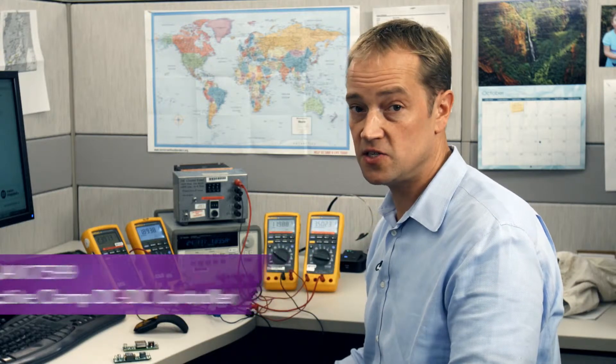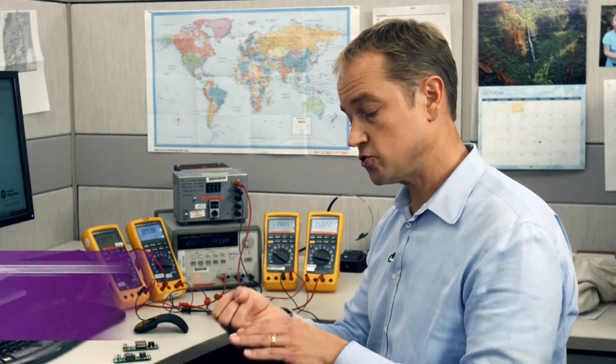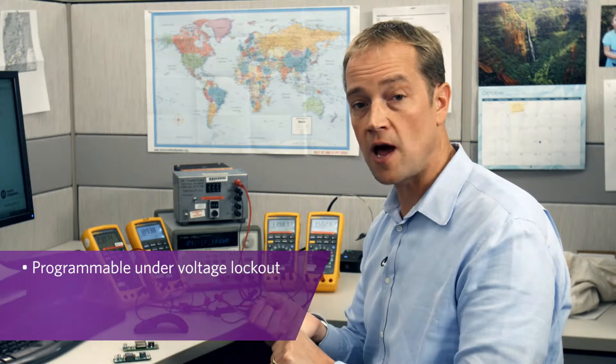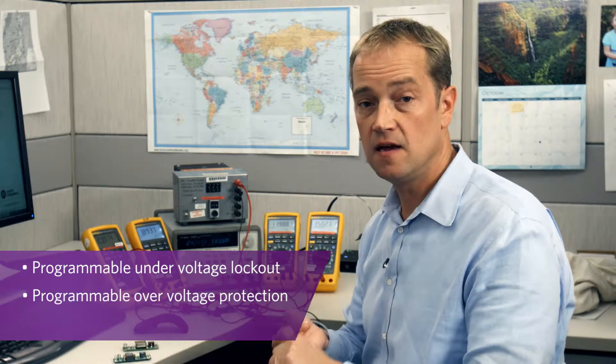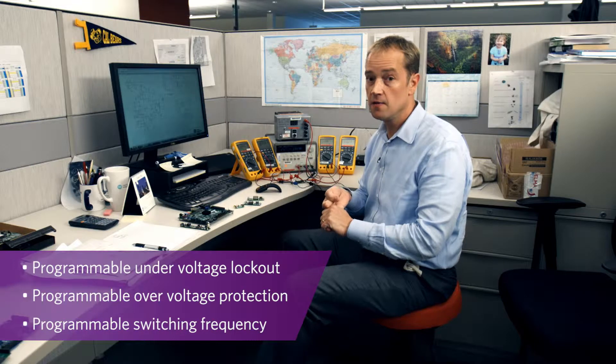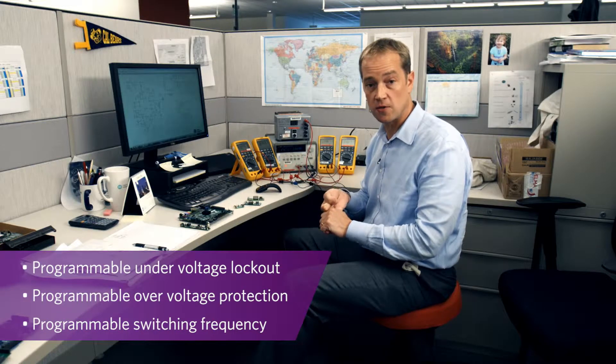MaxRefDes 41 and 48 feature the Max17599, our active clamp DC-DC controller that features programmable under-voltage lockout, programmable over-voltage protection, and programmable switching frequency, making for one of the most flexible parts on the market.